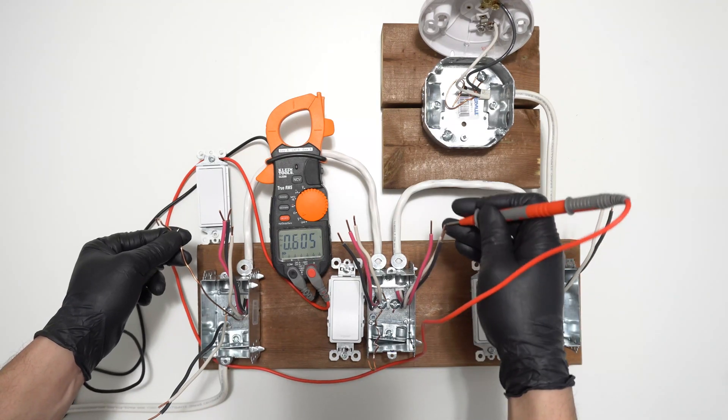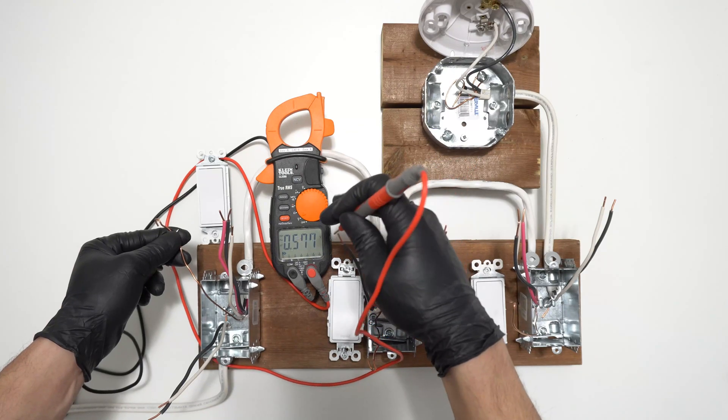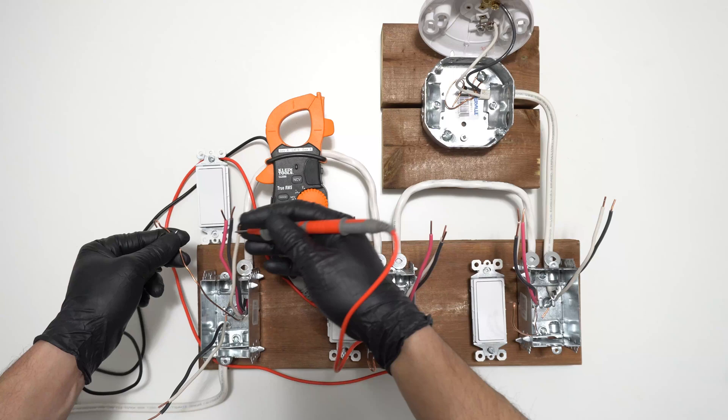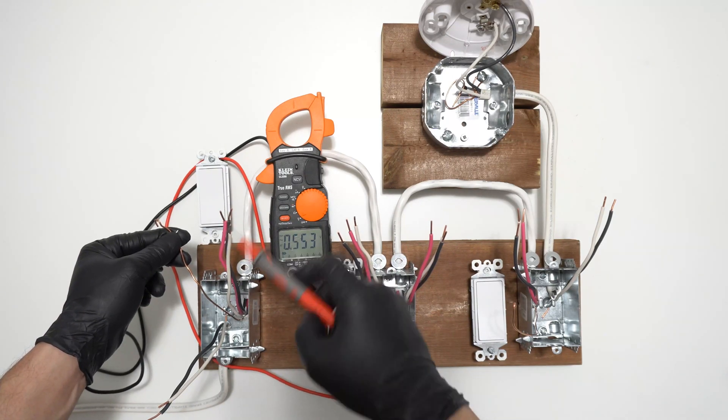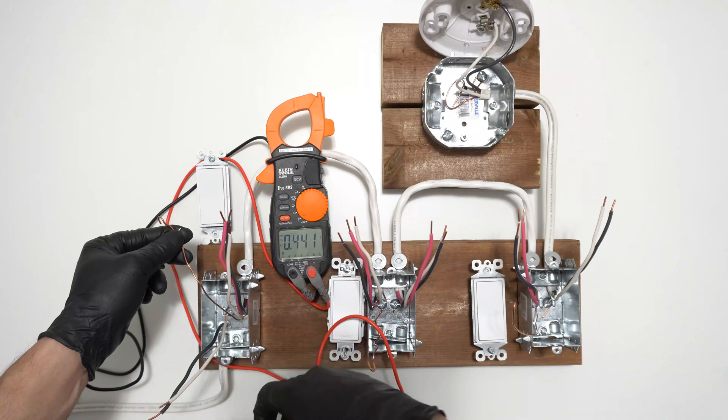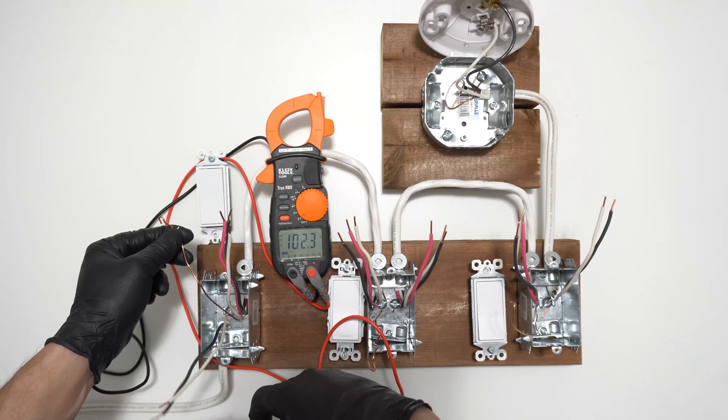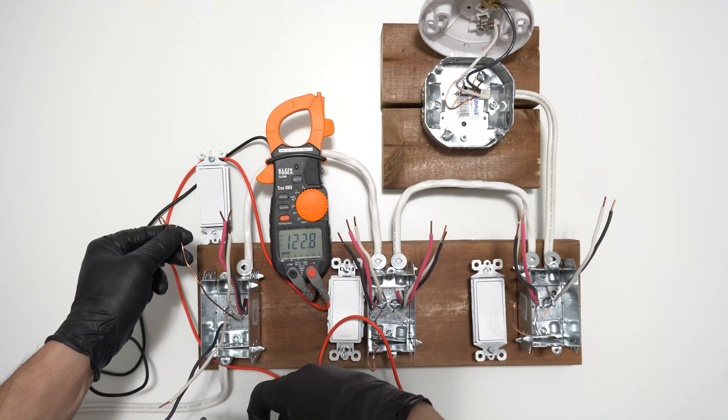And if we have a potential jump, that means the circuit is not turned off. Don't worry about these low voltage values. Here we have a potential difference close to 120. That means the breaker is still not turned off.